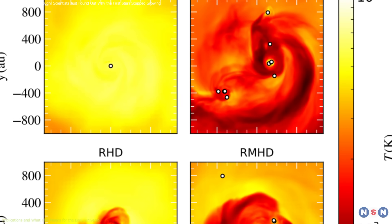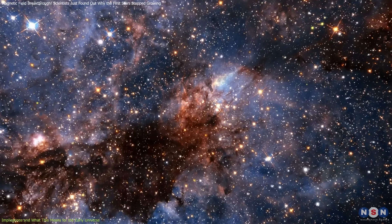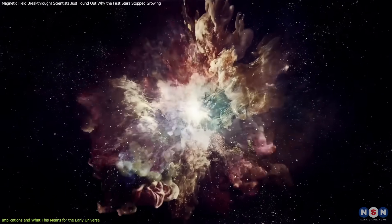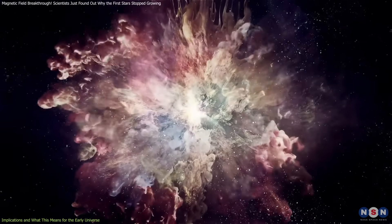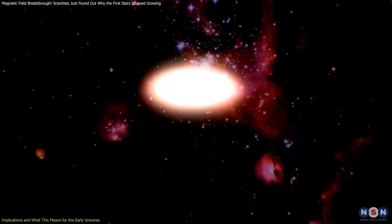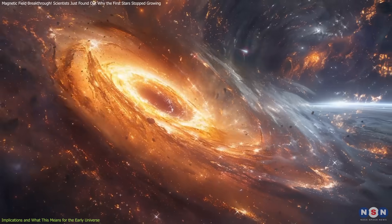Understanding how magnetic fields shaped early star formation has huge implications for multiple areas of astrophysics. First, it helps explain why we don't see supernova evidence for ultramassive stars. If the first stars weren't as massive as previously thought, then their explosions wouldn't have left behind the same chemical fingerprints that scientists were looking for.